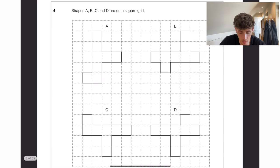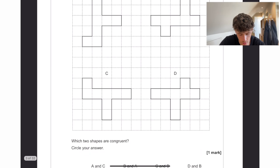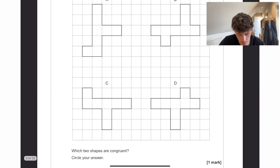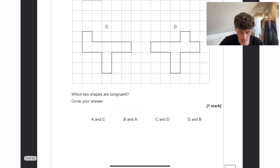Shapes A, B, C, D are on a square grid. Which two shapes are congruent? So congruency would be A and C because they've just been rotated slightly.